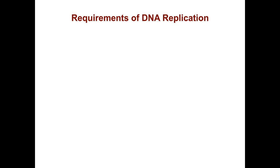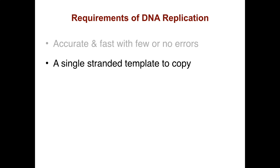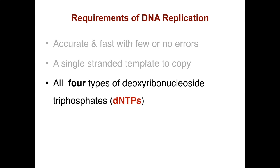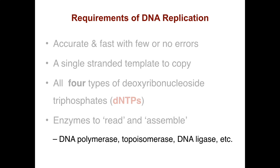What do you require to replicate DNA? You have to have a process that's accurate and fast with few or no errors. You need a single-stranded template to copy — that's the semi-conservative model. You need all four types of deoxyribonucleoside triphosphates, the dNTPs — these are the building blocks. And you need enzymes that can read and assemble the DNA, including DNA polymerase, topoisomerase, DNA ligase, etc.